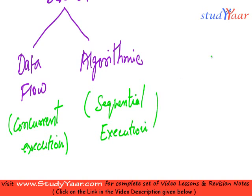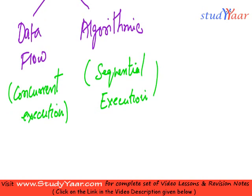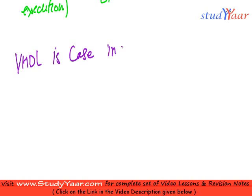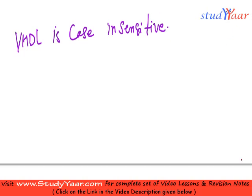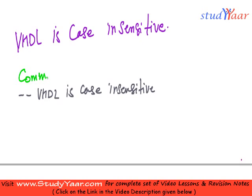That is just the broad description of VHDL; we are going to look into these in greater detail later. VHDL is case insensitive. You use comments by double dash — so if you have to write a comment saying 'VHDL is case insensitive', you would write double dash followed by the comment text.